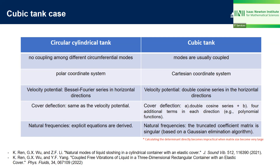Therefore, we further expand the deflection in the cubic tank as a summation of double cosine series plus additional terms in each direction; for example, we use polynomial functions in our work. Different from the circular cylindrical tank where natural frequencies can be obtained by solving explicit equations, in the cubic tank we have to find the natural frequencies corresponding to the truncated coefficient matrix being singular. It should be noted that calculating the determinant directly becomes impractical when the matrix size becomes very large, so we judge whether the matrix is singular based on the Gaussian elimination algorithm.